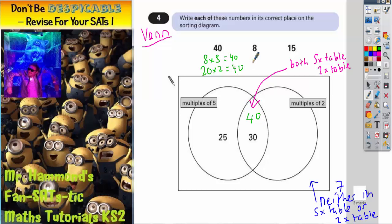The number 8. Well is the number 8 a multiple of 5? No it's not. Is the number 8 a multiple of 2? Yes it is because it's even. Because 4 times 2 equals 8. So 8 can only go in the multiple of 2 circle but it can't go in the overlapping bit. So it's got to go in the bit here. So 8 can go anywhere in here but not the overlapping bit. So 8 can just go there.